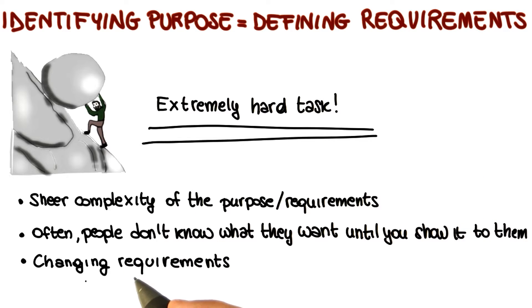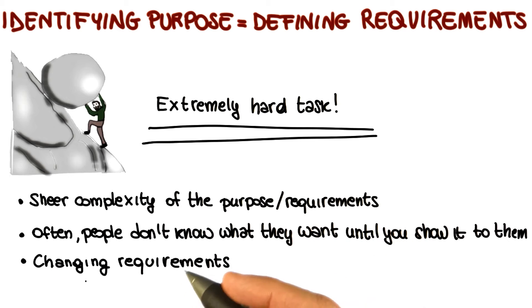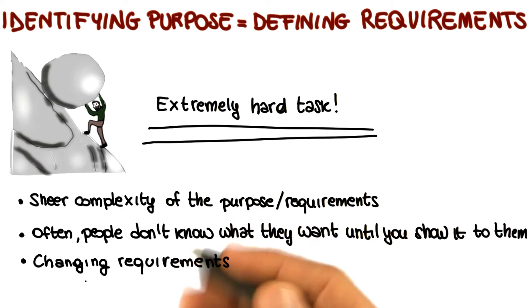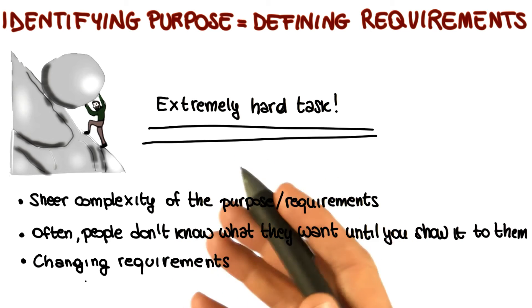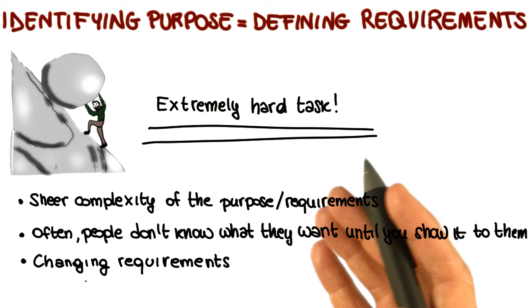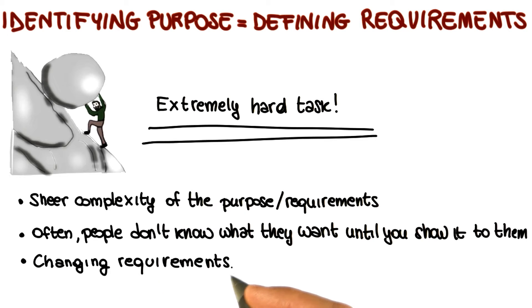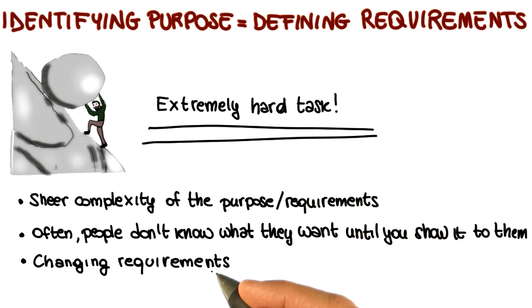Third, requirements often change over time. Customers change their mind, and designing and building a system raises new requirements. So for many reasons, requirements tend not to be stable — they tend to evolve. And that, of course, makes it harder to collect them.